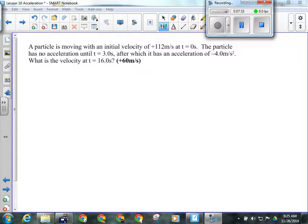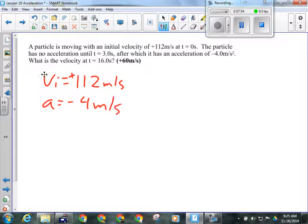So, we've got this particle moving with an initial velocity of 112 meters per second, so we're told VI, and that's positive. And the particle has no acceleration until time 3 seconds. So, it travels at a constant speed for 3 seconds. After which, its acceleration is negative 4 meters per second squared. What's the velocity at time 16 seconds? It doesn't start accelerating until time 3 seconds. Now, it wants to know how fast it's going at time 16 seconds. How long did it accelerate for? 13 seconds. That's the trick to this question. It didn't accelerate the first 3 seconds, so our time is actually only 13 seconds.